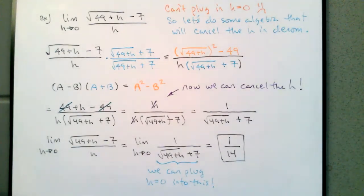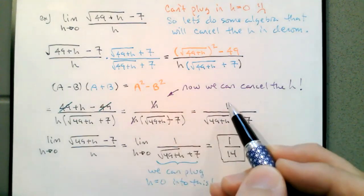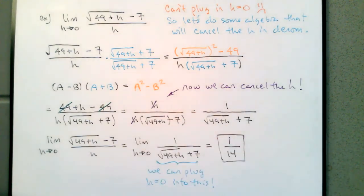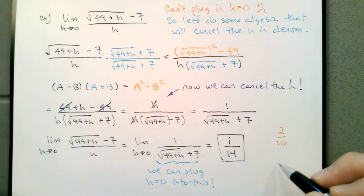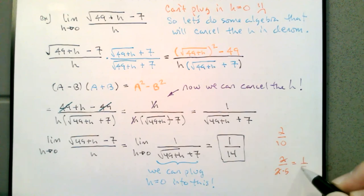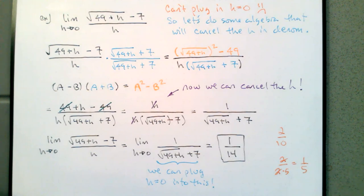Student: After you cancelled out the h's, how did you get the one on top? h divided by h equals one. There's an h in the numerator and an h in the denominator — like 2/10 where 10 = 2×5: cancel the 2's and you're left with 1/5. But instead of 2 it was h, and instead of 5 it was √(49+h) + 7.